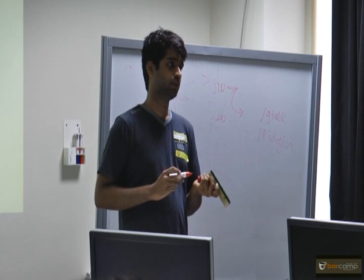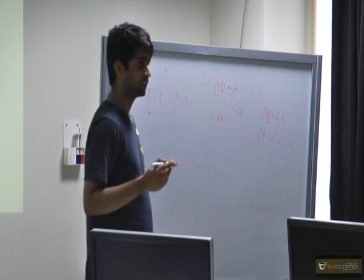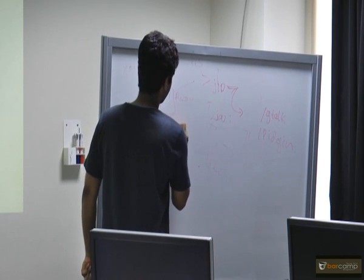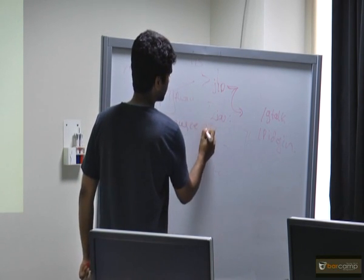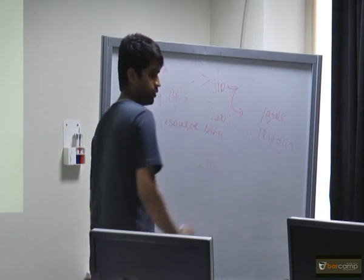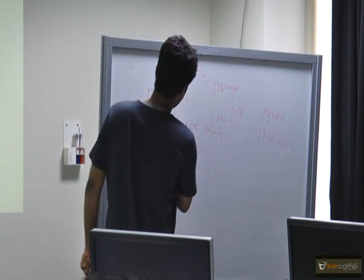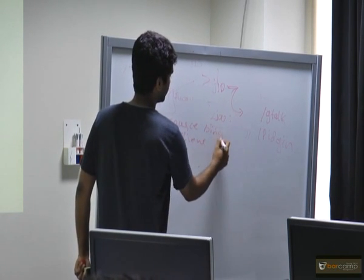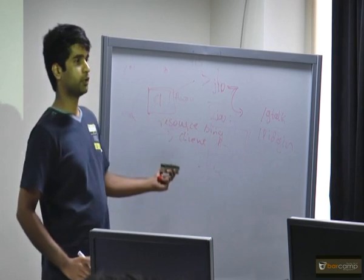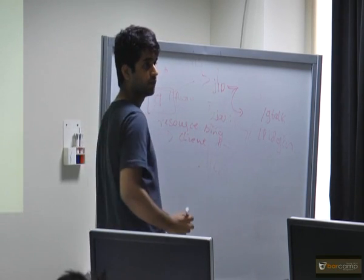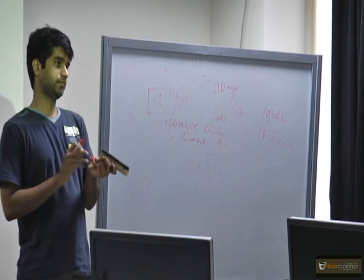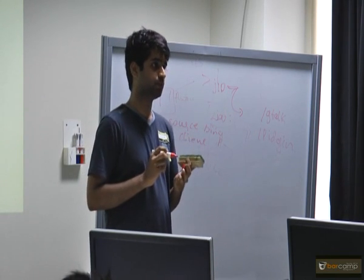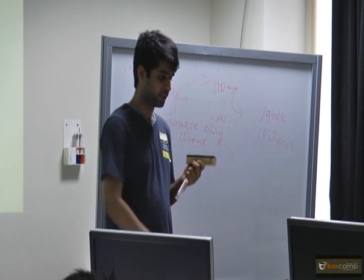IQ messages are sent for resource binding, as mentioned earlier. When the server wants to push messages to the client — like presence information — it also uses IQ. On first login, you get the list of contacts via an IQ. All these things are IQ stanzas.